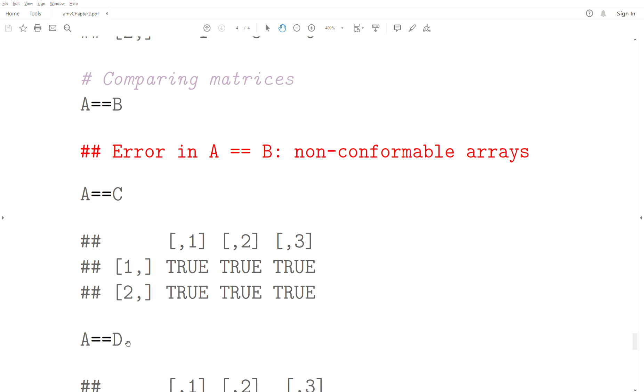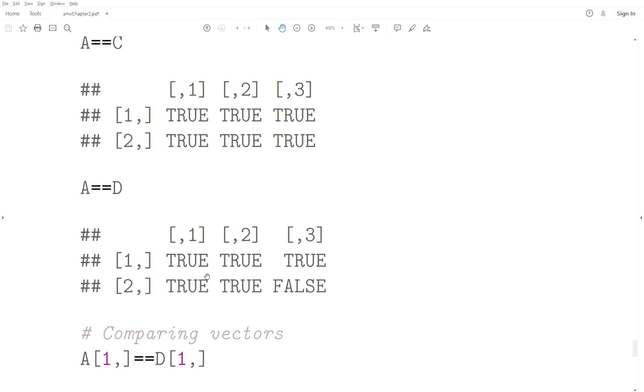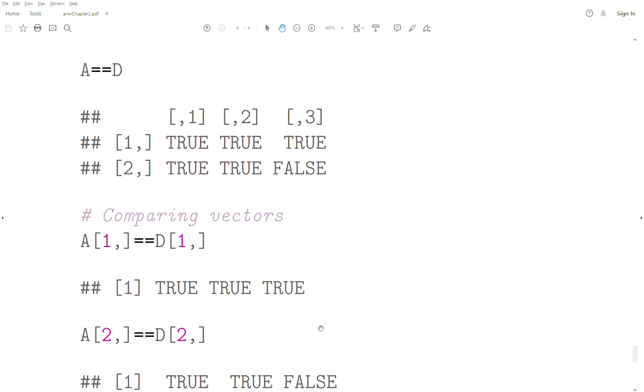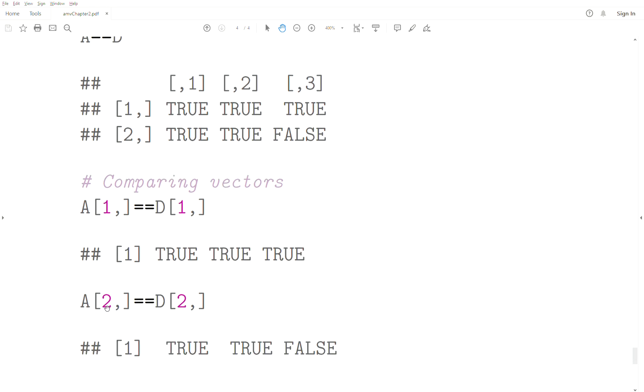When we compare A and D, it goes through each element. When it gets to the last one, it's false. So A and D are not equal because this last piece is false. We can grab vectors or elements of a matrix and compare them. Let's compare row one of A with row one of D. We get true, true, true. But when we compare the second row of A with the second row of D, it's true, true, false—that last element was false.